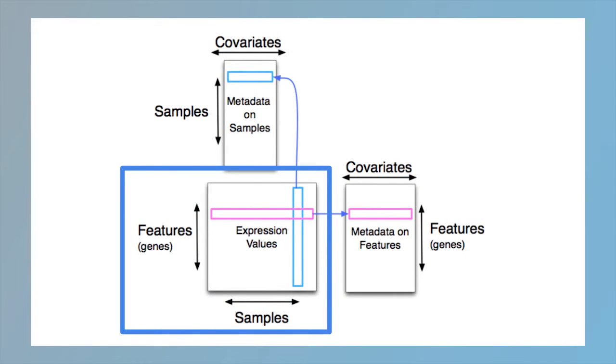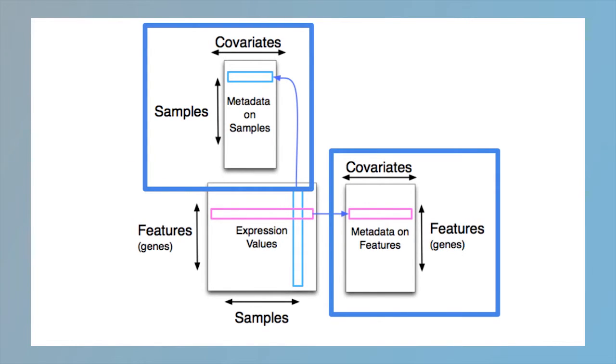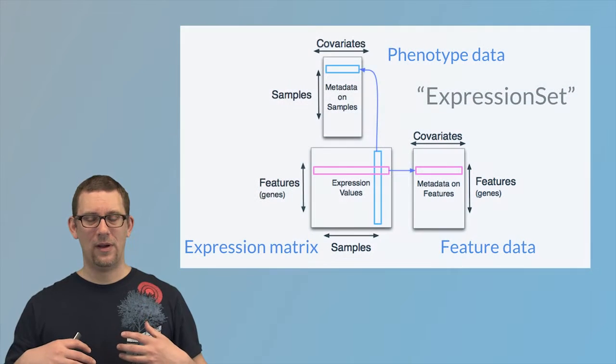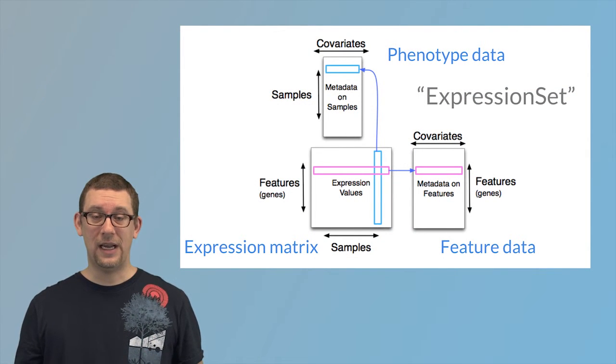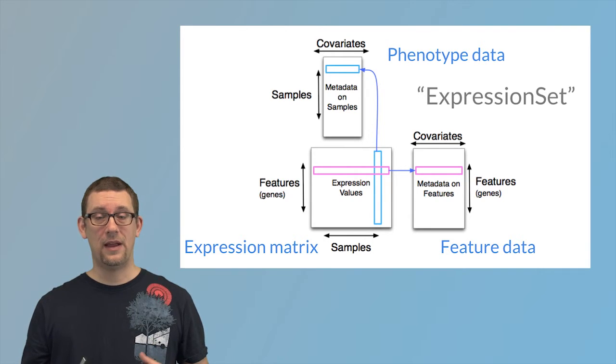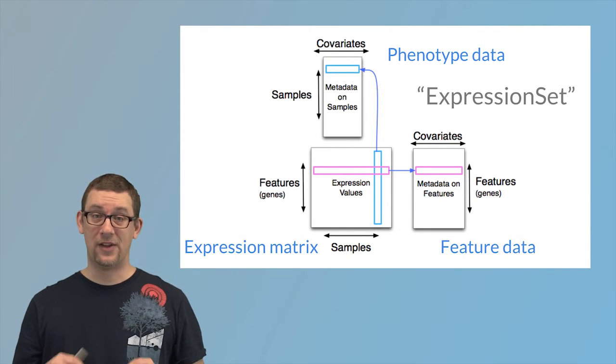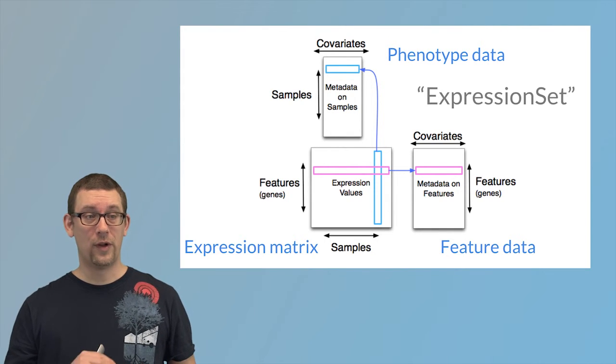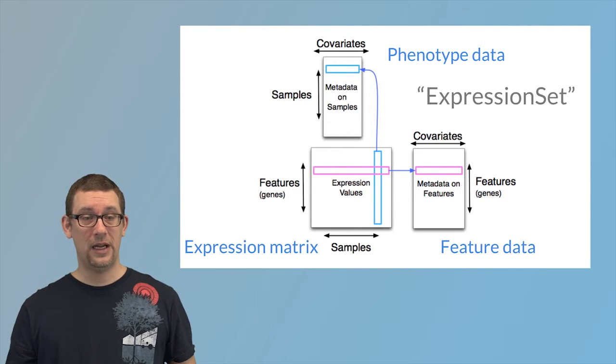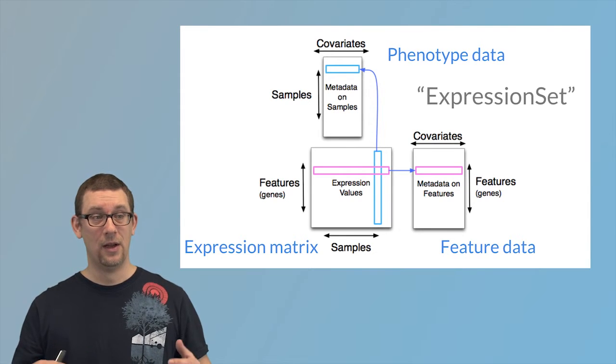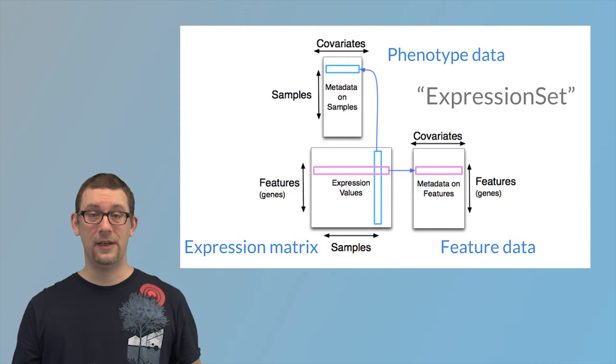In context of the previous lecture, we think of the expression matrix as really raw experimental data. We think of the phenotype data and the feature data as metadata on the experiment. And all of these three data frames or matrices fit together into something we call an expression set, which provides a tight linking between rows of the expression matrix, columns of the expression matrix, and the relevant rows and columns on the feature data and the phenotype data.